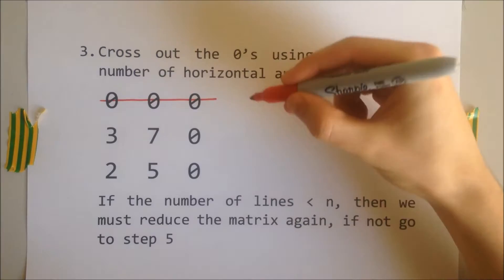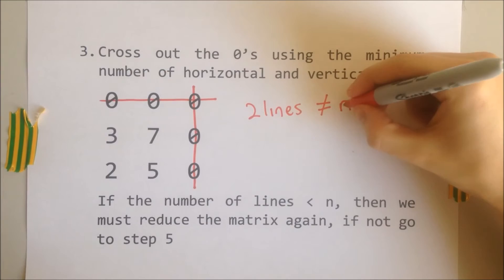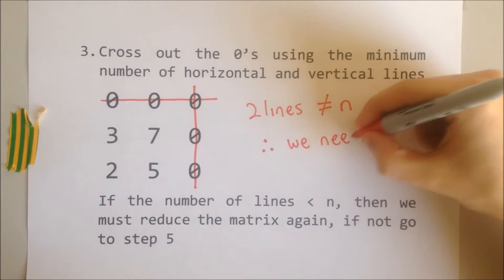Step three, cross out the zeros using the minimum number of horizontal and vertical lines. There are multiple optimum ways of crossing out all the zeros, but one systematic way to do it is to cross out the line with the most zeros on first and then continue doing this until exhausted. As you can see here, we have used just two lines.